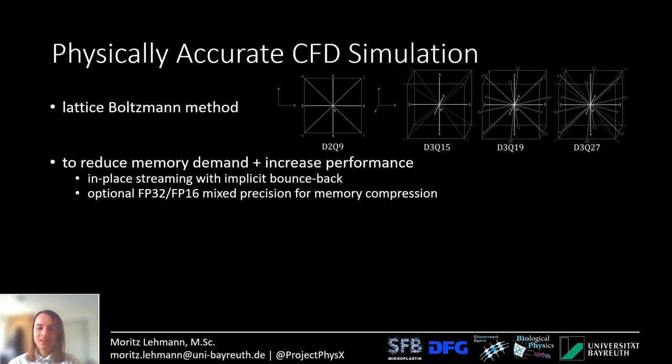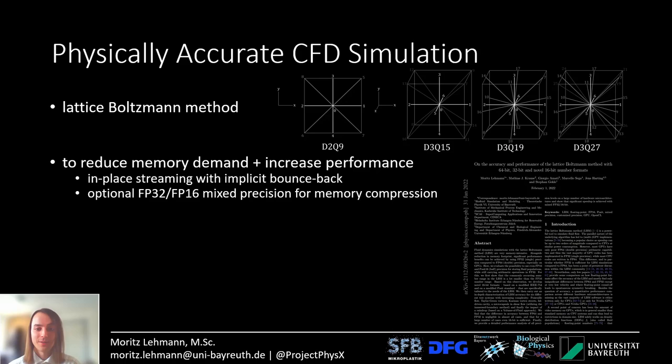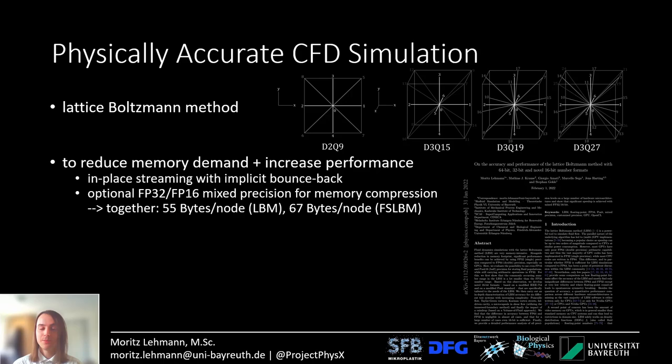Using 16-bit floating point also almost halves the memory demand again. I have a preprint on this currently. Together, these two tricks make the Lattice Boltzmann method use only 55 bytes per node for standard LBM and only 67 bytes per node for free surface LBM.